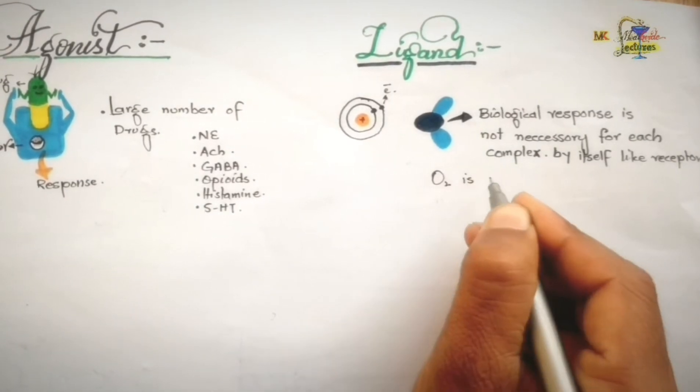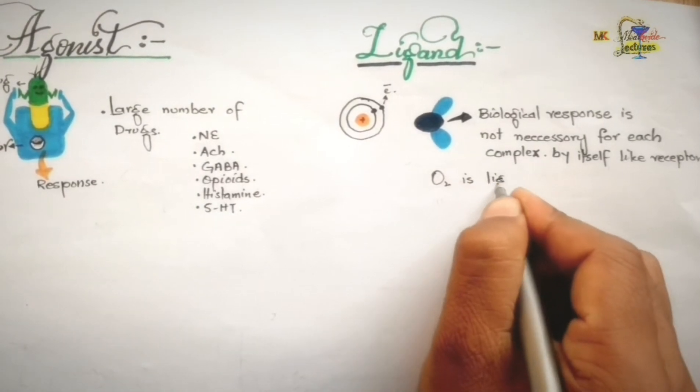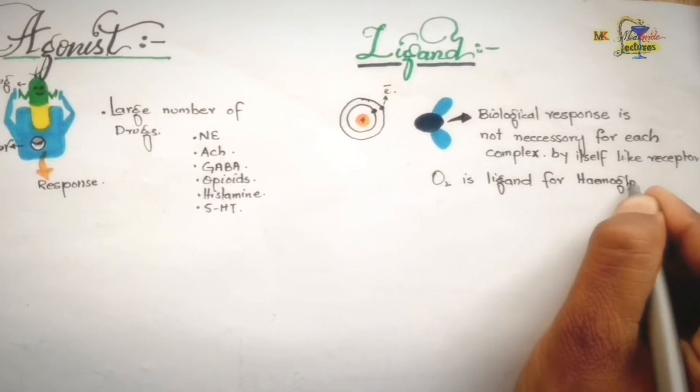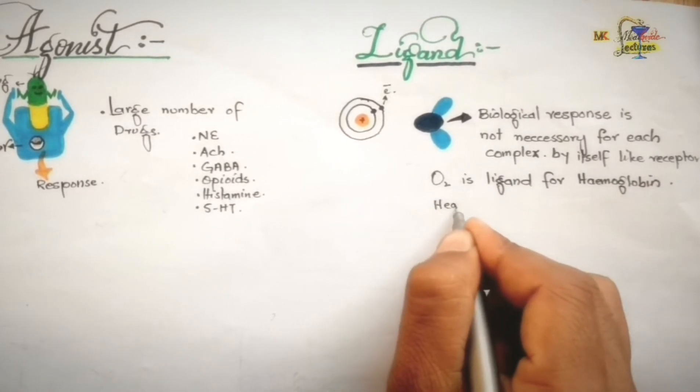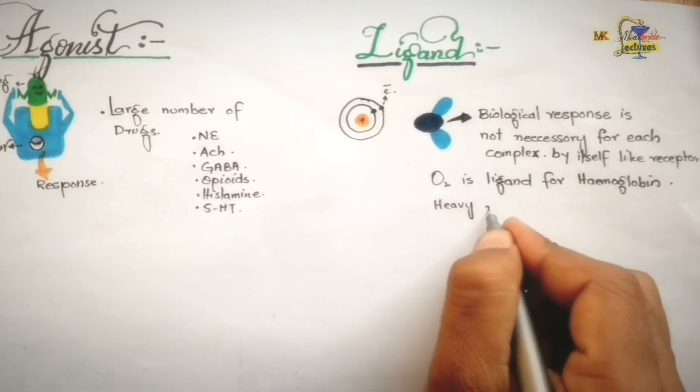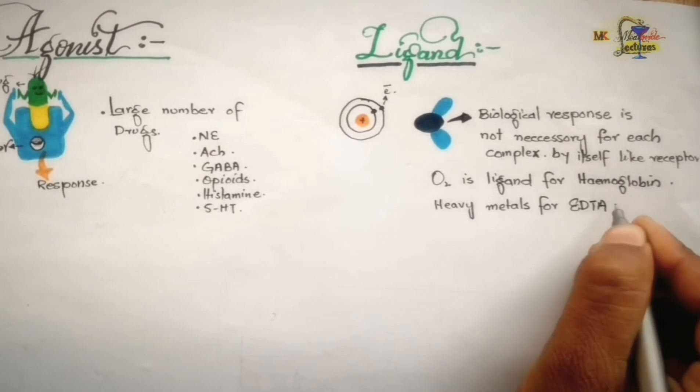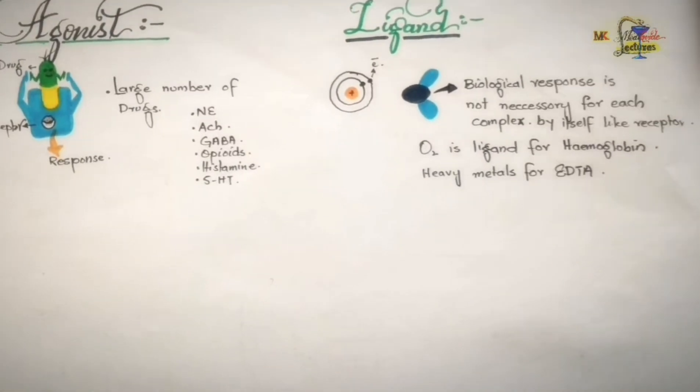For example, oxygen is a ligand for hemoglobin which is not an agonist. And another example is heavy metals which are ligands for EDTA which are not agonists. And adrenaline which is an agonist as well as ligand at adrenergic receptors.